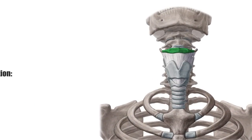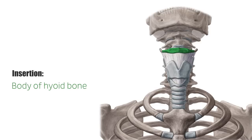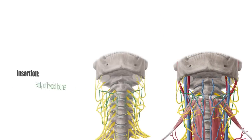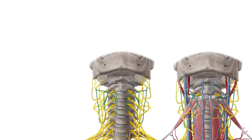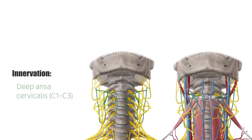Distally, the muscle attaches to the body of the hyoid bone. All four infrahyoid muscles are supplied by the deep ansa cervicalis, which arises from the cervical plexus.